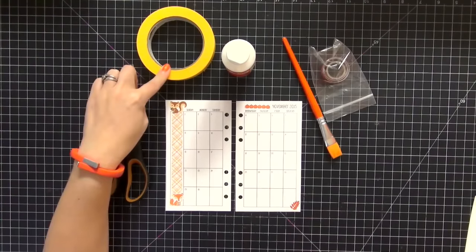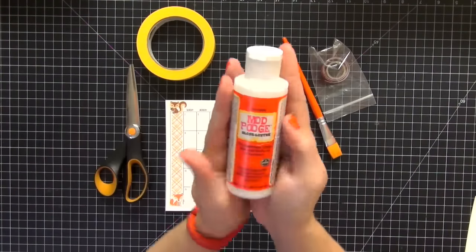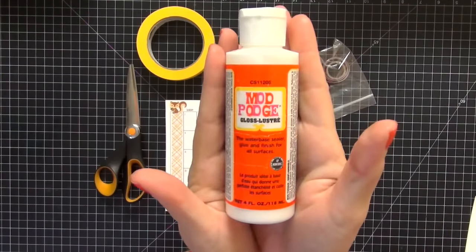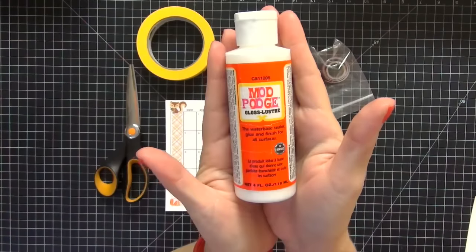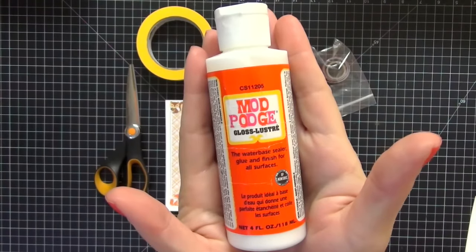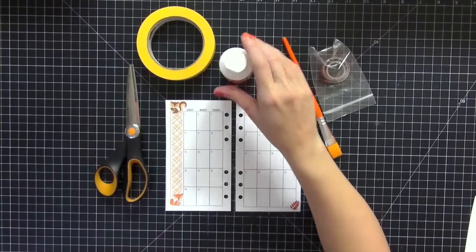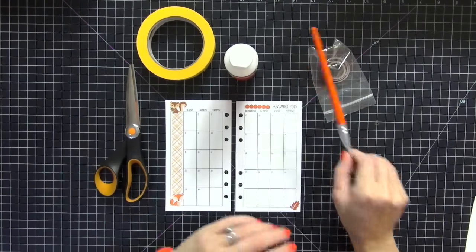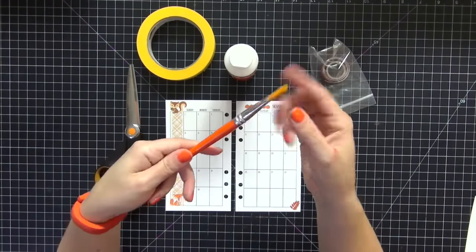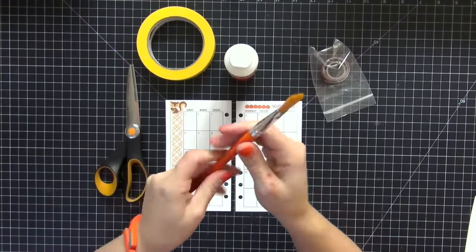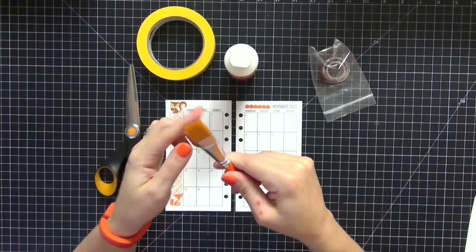Mod Podge and this is the gloss version. You want to make sure you use the gloss version because the non-glossy matte version will dull the glitter too much. You want to use a paintbrush. This one I use specifically for my Mod Podge, but I make sure that I rinse it afterwards so the bristles are still okay.